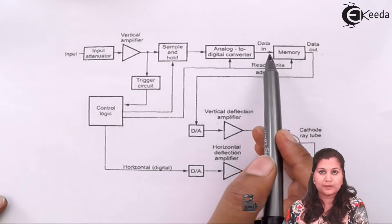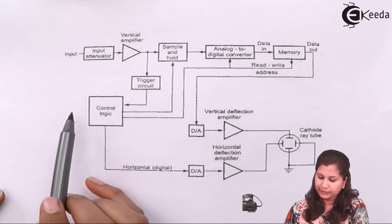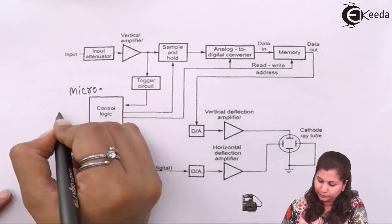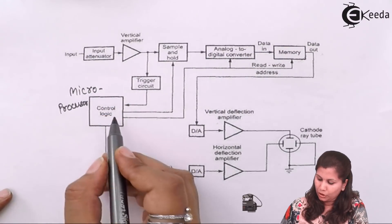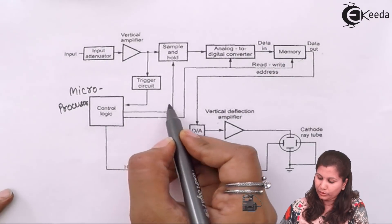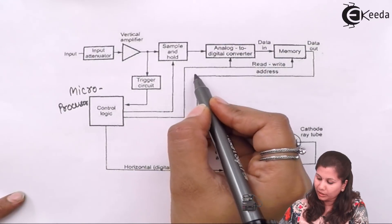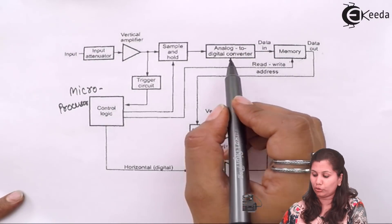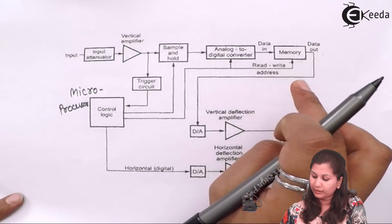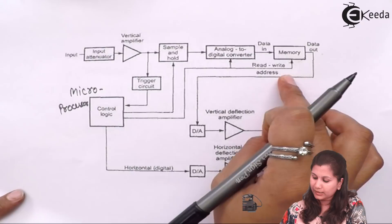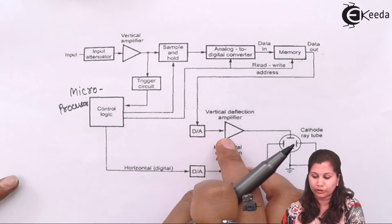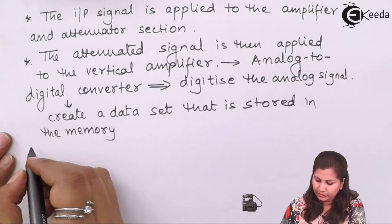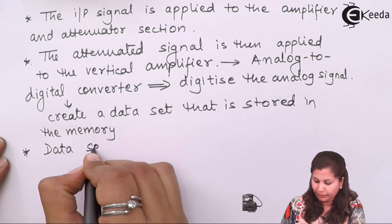The data set present in the memory is processed by the microprocessor — the control logic is the microprocessor. The microprocessor controls the sample-and-hold circuit and also provides control signals to the A-to-D converter and memory. Inputs include read and write operations; if we want to do any processing over that data, that can also be done. The output of the memory is given to the digital-to-analog converter. So the A-to-D converter creates a data set which is stored in memory and processed by the microprocessor.